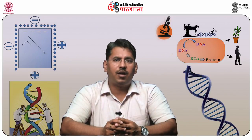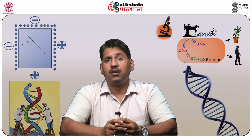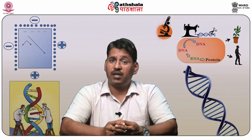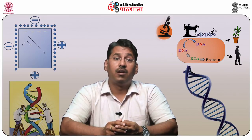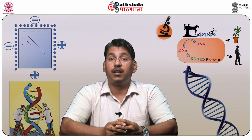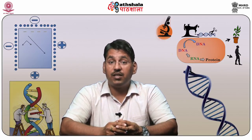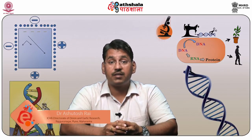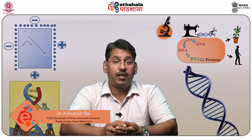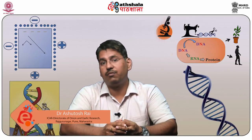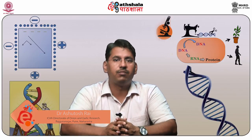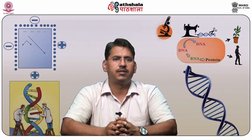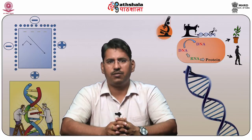So, in this module, we learned about single-stranded bacteriophage vectors M13, phasmid vectors, replication in these vectors, and high cloning capacity vectors like bacterial artificial chromosome vectors, yeast artificial chromosome vectors, and mammalian artificial chromosome vectors. Thank you.